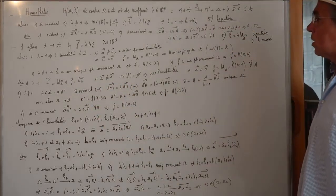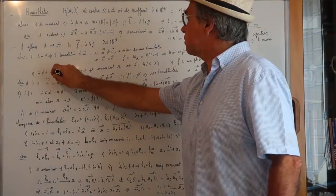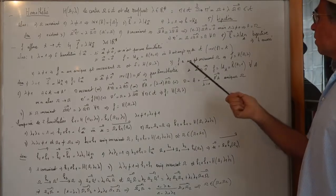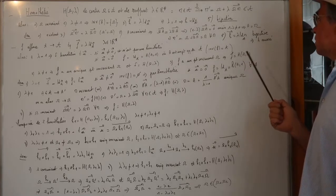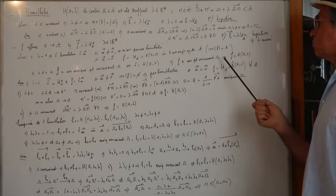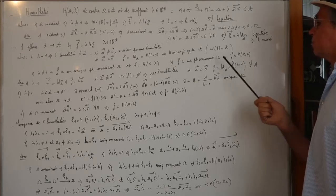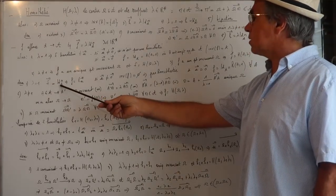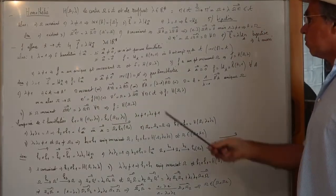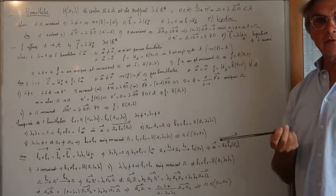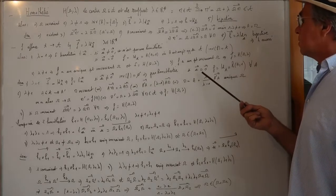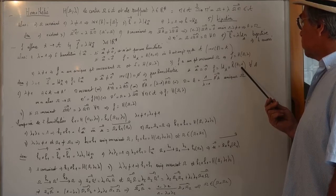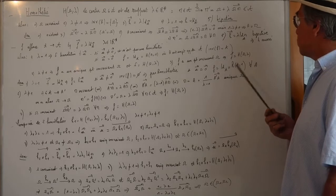Si λ ≠ 1, F a un unique point invariant Ω, et alors F est l'homothétie de centre Ω et de rapport λ. Si F a un point invariant Ω, F est l'homothétie de centre Ω et de rapport λ — pas unique si λ = 1. Démonstration : si λ ≠ 1, je prends un point A d'image A'. Dire que M est invariant équivaut à vecteur A'M = λ·vecteur AM. En décomposant, on trouve que vecteur AM = (1/(λ-1))·vecteur A'A, ce qui donne un unique point invariant Ω.